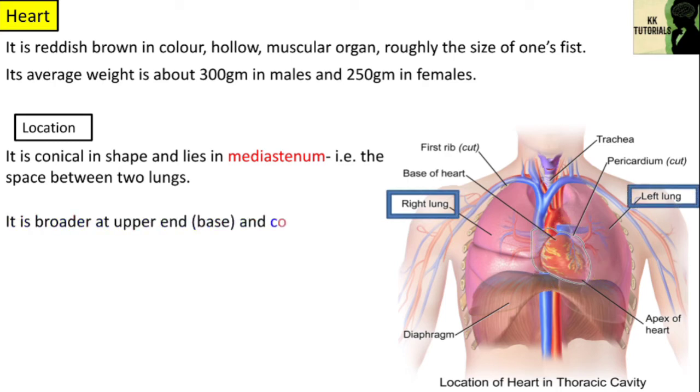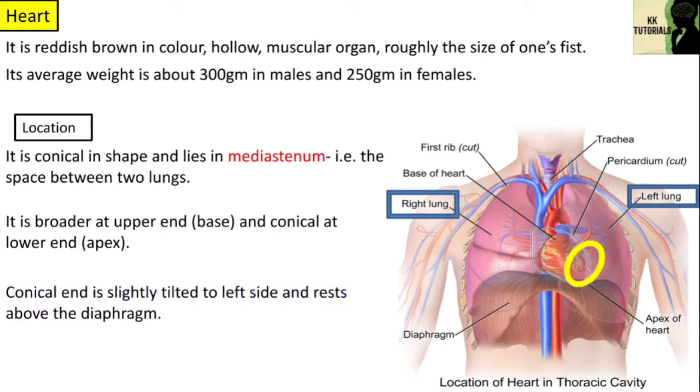It is broader at upper end and conical at lower end. Conical end is slightly tilted to left side and rests above the diaphragm.